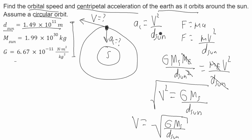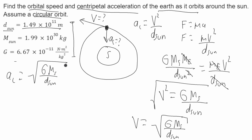So that's the expression for v. For AC, it'll be v squared — which is the square root of G times the mass of the sun over d of the sun, squared — all over d of the sun.